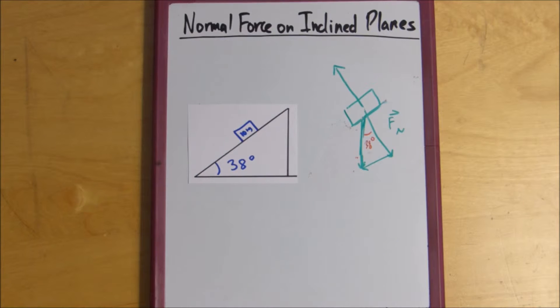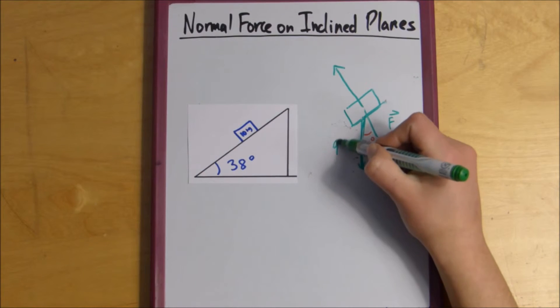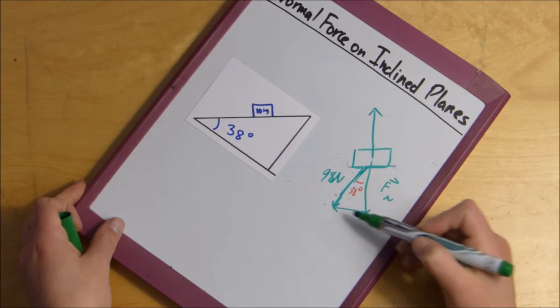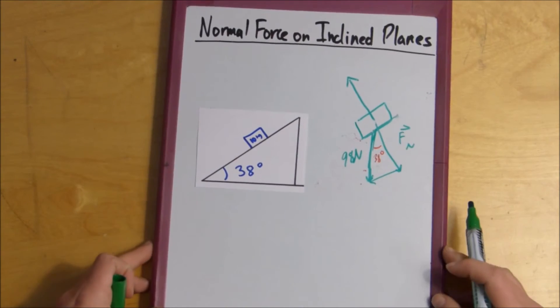We know the hypotenuse is the weight force, 98 newtons. If you kind of tilt the board, you can see here's the triangle, and here's the hypotenuse.